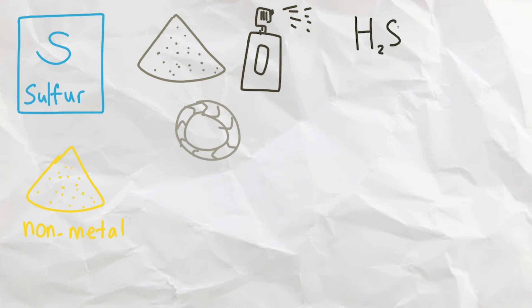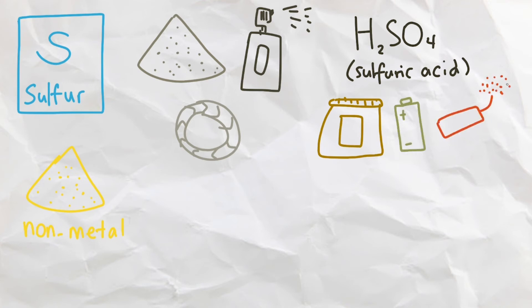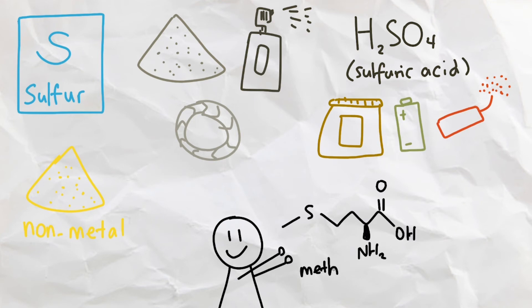But by far, the most notable use of sulfur is in sulfuric acid, which is an ingredient for creating fertilizers, lead acid batteries, and explosives. We also need sulfur to live, as it is part of two essential amino acids to produce proteins.